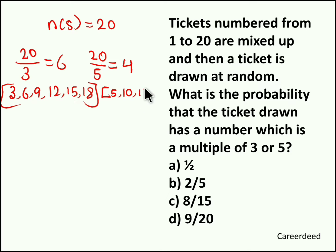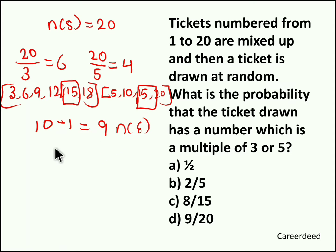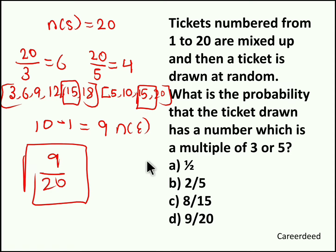5, 10, 15, and 20 are multiples of 5 in 20. So totally we have 6 plus 4, that is 10 numbers. But wait — 15 is repeated for 2 times, so you have to eliminate the repetition. Subtract 1 from 10, so 10 minus 1 gives 9. So 9 is the total number of events, and total sample space is 20. Therefore 9 by 20 is the probability of getting a multiple of 3 or 5 from 20 tickets.